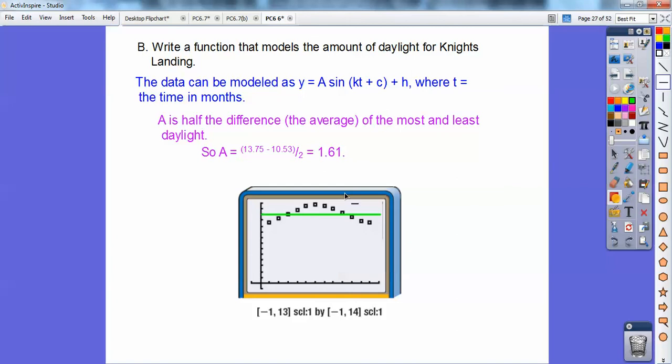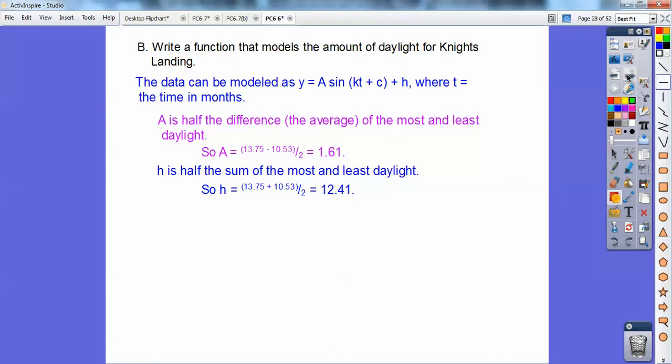The data can be modeled as this, where t is in time and months. So a is half the difference of the average of the most and the least of daylight. See, here's my midline right here. This is my h, basically. And so my a is how much it goes up and how much it goes down. So if I take the tallest and the smallest and subtract them and then take half of it, that will tell me what a is. And then h is you add them together and divide by 2. So if I add them together and divide by 2, I get 12.41. And then since the period is 12, because it's going on a 12-month cycle, then 2 pi over k is equal to 12. It's always 2 pi over k equals your period. So k ends up being pi over 6. So I'm getting all the pieces right there. Pi over 6 goes right there. I found out my h, which is 12.41, goes right there. I found out my amplitude is 1.61.